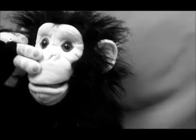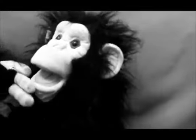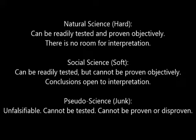So having these official definitions out of the way, I wish to present a simplified way of looking at the differences between the three. These aren't meant to replace the definitions, just offer a way to distinguish between them easily. A hard or natural science can be readily tested and proven objectively — there is no room for interpretation. A soft or social science may be tested, but the results are not objective, thus leaving room for interpretation.